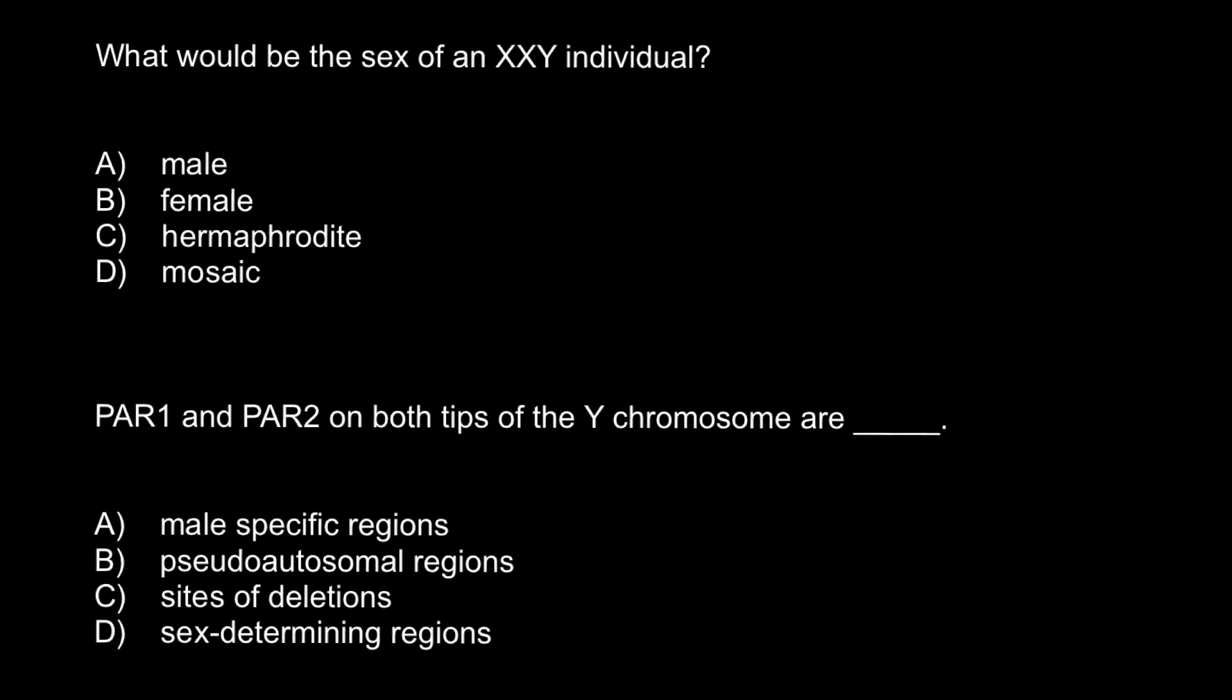So here's the first question. What would be the sex of an individual that has three chromosomes X, X, and Y? This is all sex chromosomes and here's four answers to choose from, whether it's going to be male, female, hermaphrodite, or mosaic.